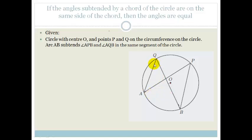And we need to prove that these two angles are equal. So I'm going to start by drawing some construction lines. I'm going to construct lines joining AO and OB.